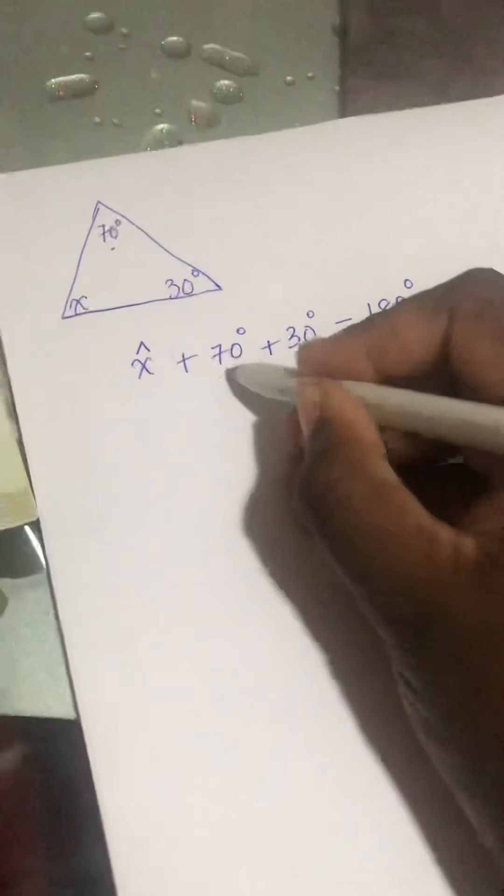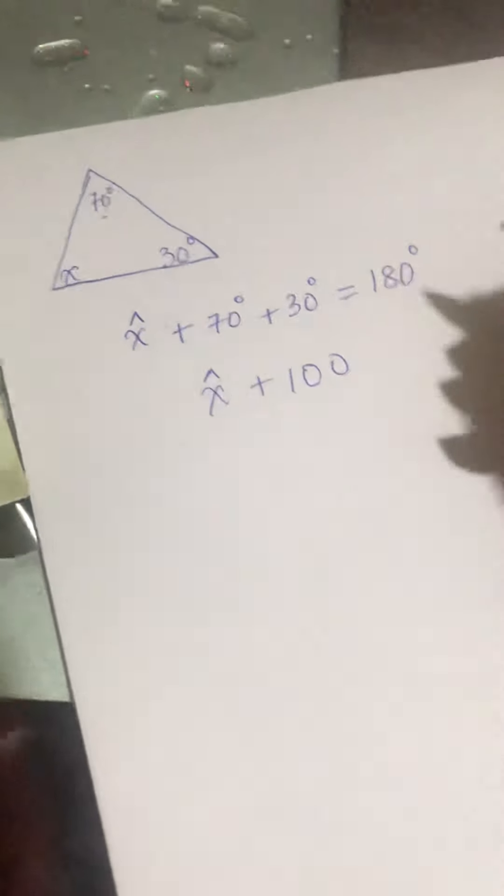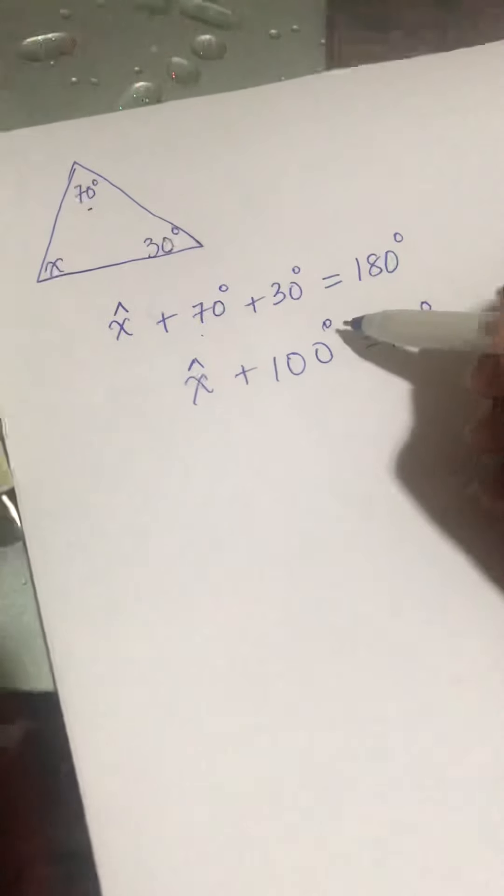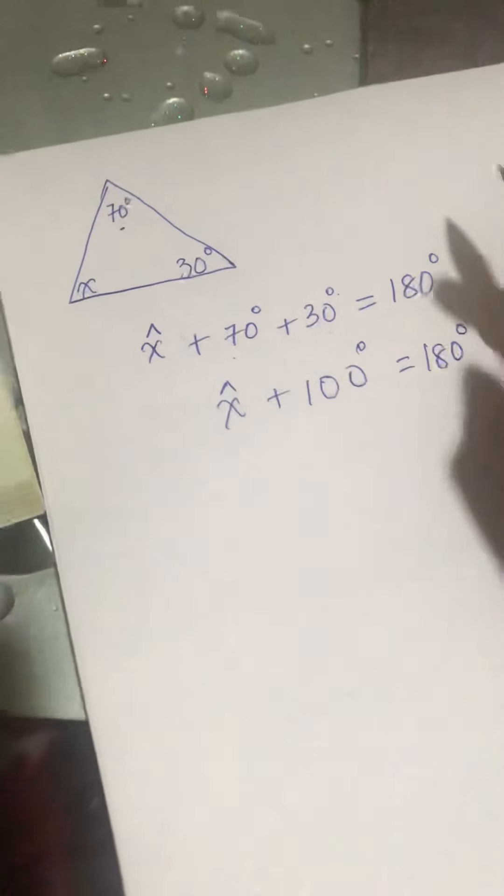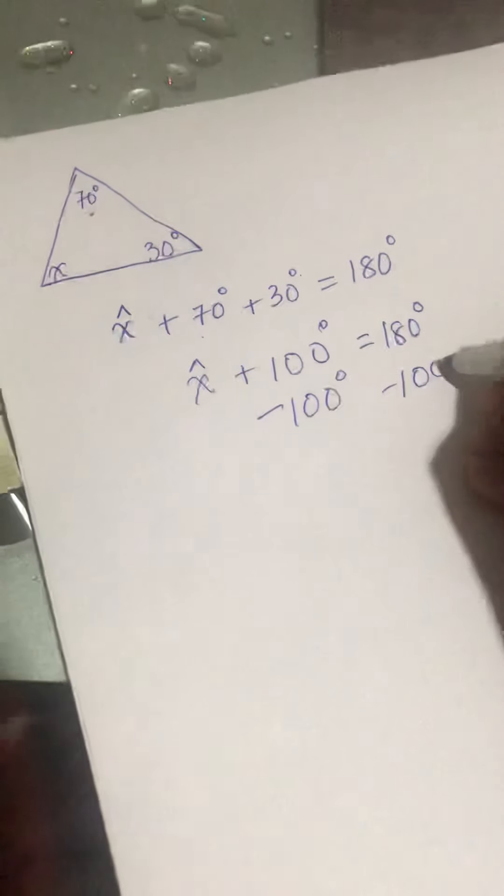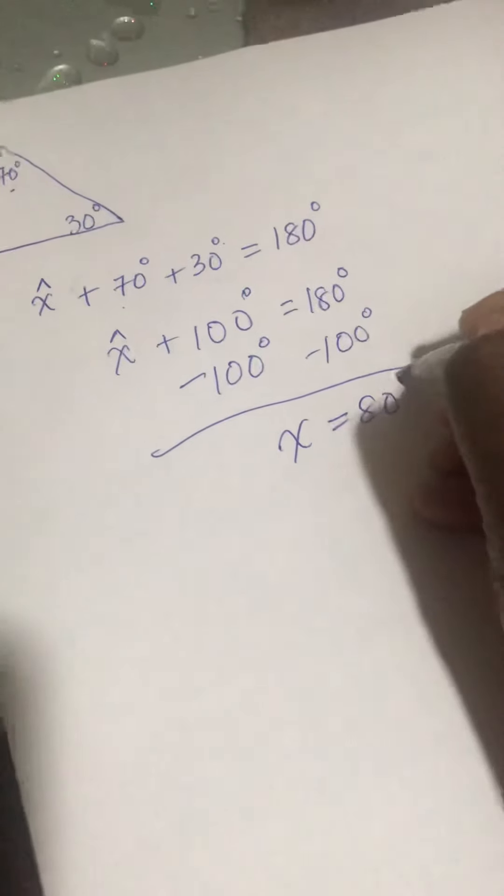Then I solve. 70 plus 30 is 100. x plus 100 degrees equals to 180 degrees. You don't put the units, I am marking wrong. Minus 100 degrees, minus 100 degrees. x equals to 80 degrees.